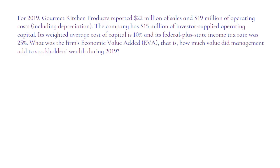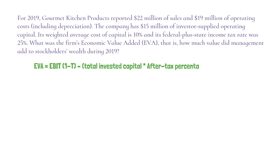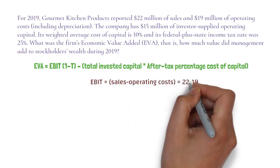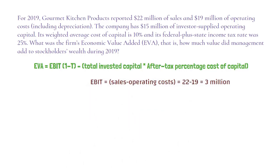To solve this question, use the EVA formula and plug in the numbers. We need to calculate EBIT first, which is sales minus operating cost: 22 minus 19 equals 3 million.